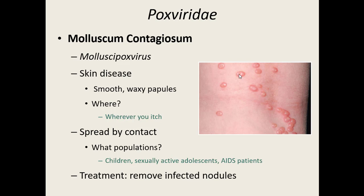The typical places that people touch and itch — whether you realize it or not — are your face, your trunk (abdomen), and your external genitalia. Those are the top three places where these papules show up. It's not a deadly virus, it's more annoying and unsightly than anything else. Children, sexually active adolescents, and AIDS patients seem to be at highest risk. Treatment: they can remove the infected nodules by freezing them off, or they will go away on their own, usually in a few weeks or months.